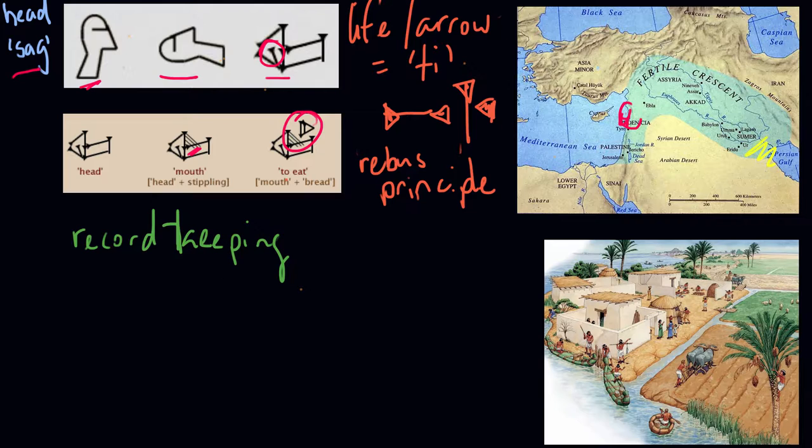And we can see this play out if we look at the example of the city of Uruk, one of the Sumerian city-states, which is where we find some of the oldest cuneiform tablets.